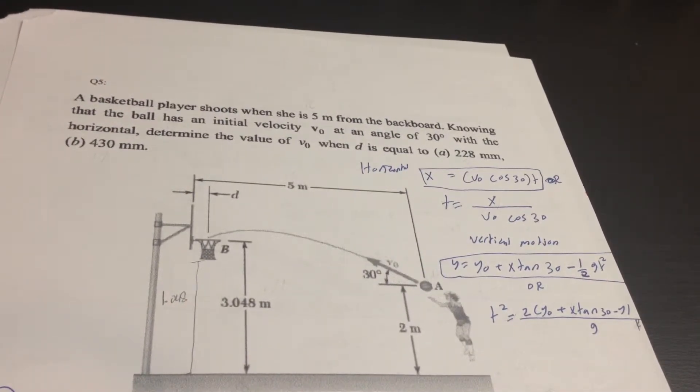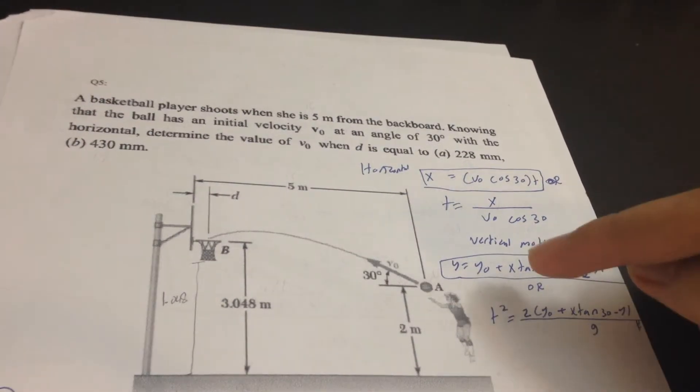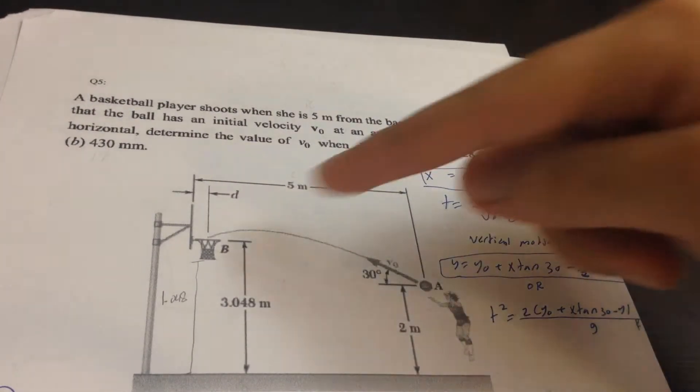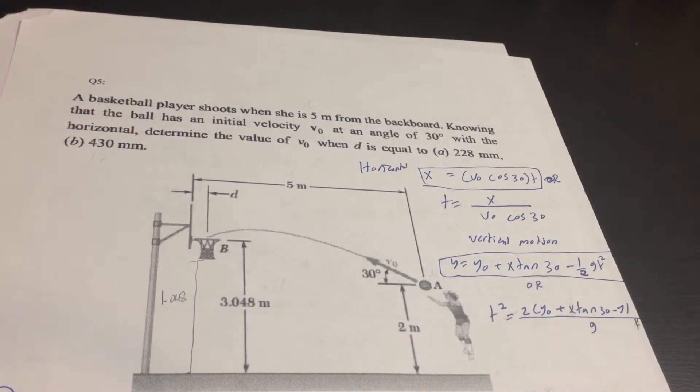We have a player who wants to shoot the basketball into the net, so they need us to find D, the distance, and V0. It's very easy and simple. The first thing we need to find is the horizontal motion and vertical motion.